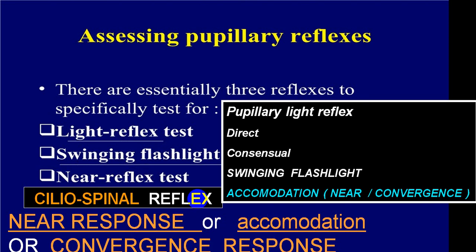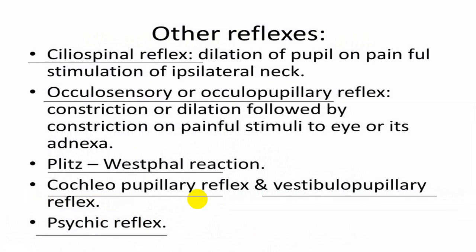Only when we suspect sympathetic system damage — particularly in Horner syndrome — do we perform the ciliospinal reflex to find out if there is damage to the sympathetic system. In Horner syndrome, because of damage to the sympathetic fiber, there is absence of the ciliospinal reflex: when you pinch the skin in the neck, the pupil on the same side should dilate. If it doesn't dilate, the ciliospinal reflex is absent.